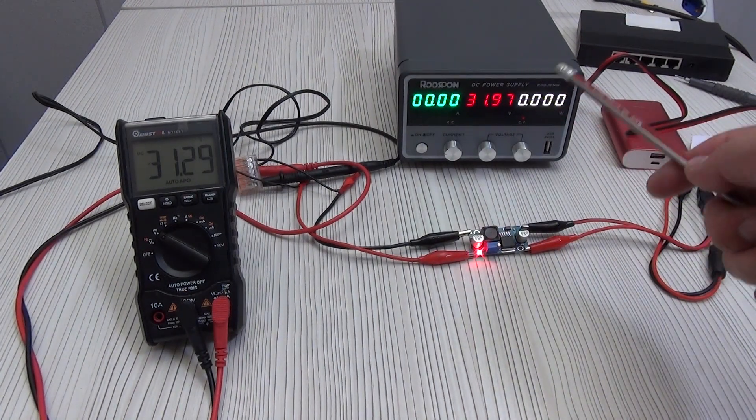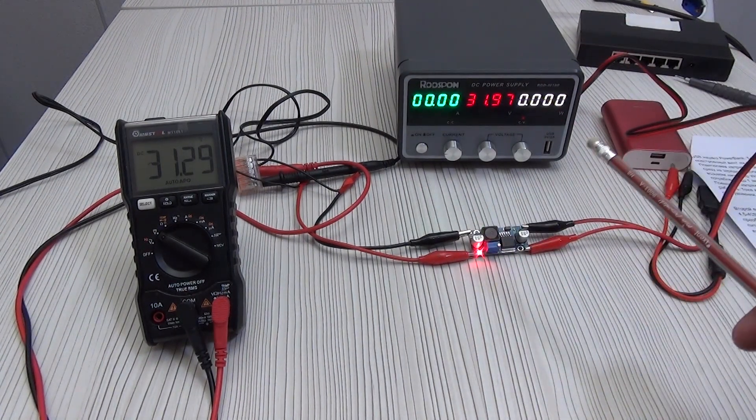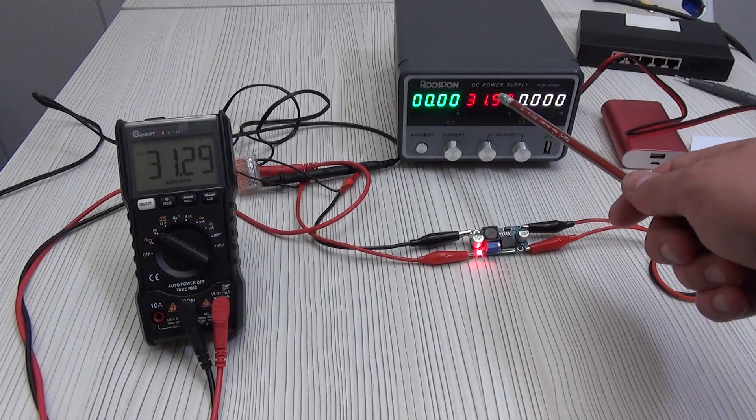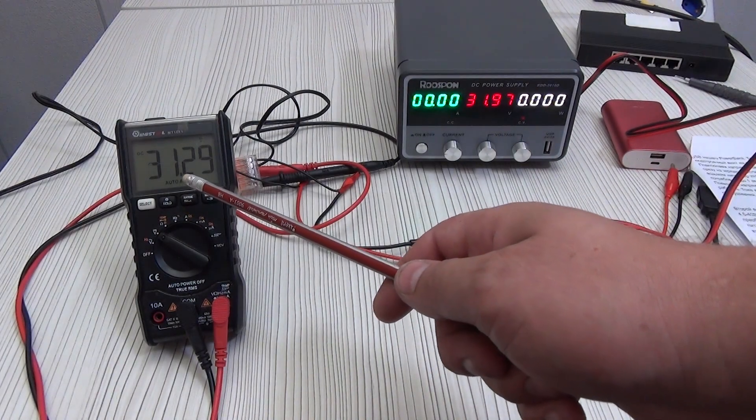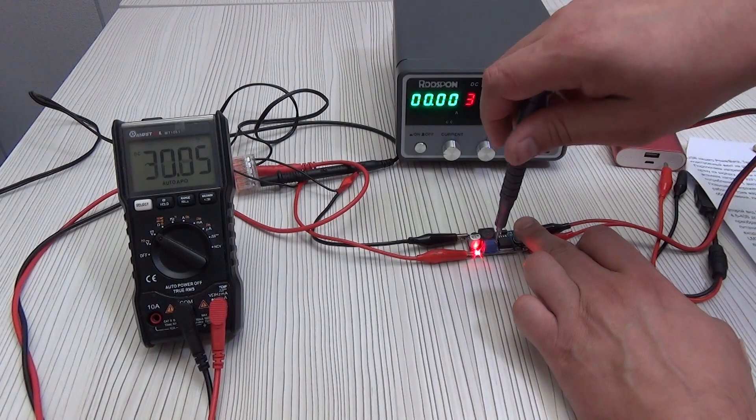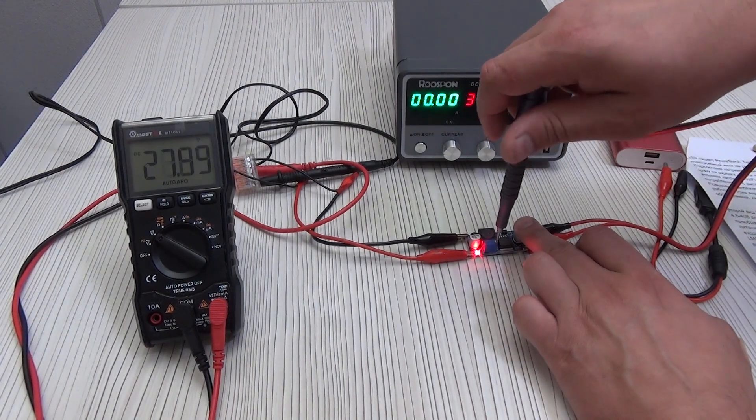But we get 35 or lower. For example, 32 volts at the input, 31.3 volts at the output. To adjust the output voltage, use a screwdriver to turn the screw of the trimmer resistor.